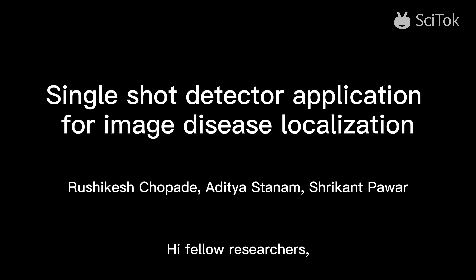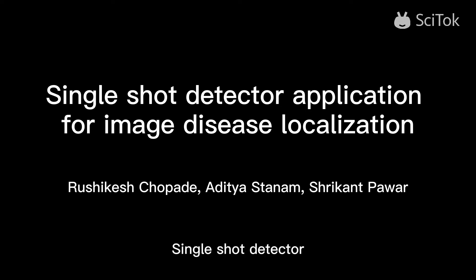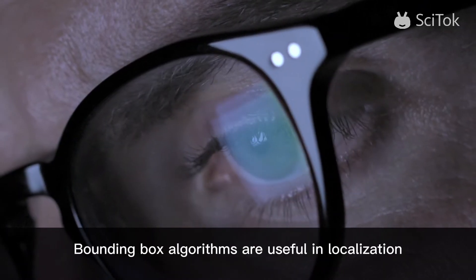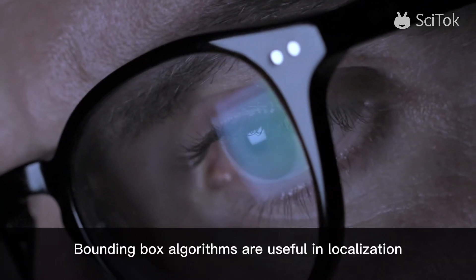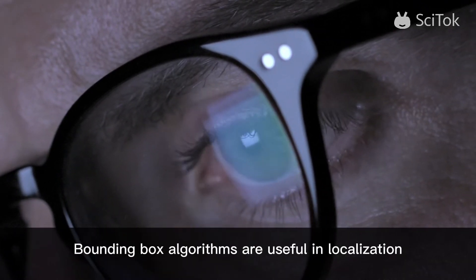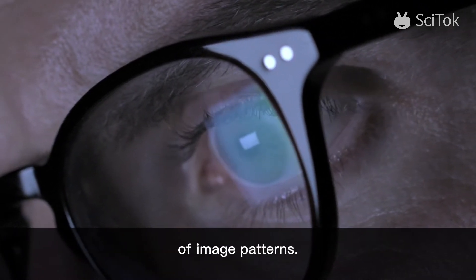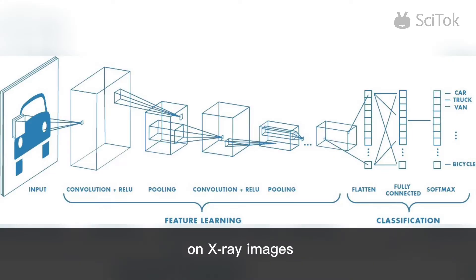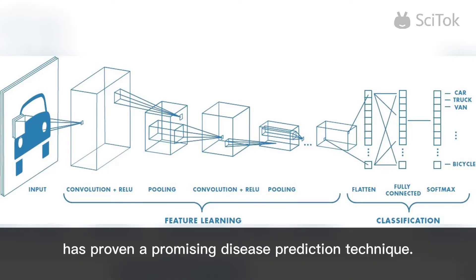Hi fellow researchers, today we will talk about single-shot detector application for image disease localization. Bounding box algorithms are useful in localization of image patterns. Recently, utilization of convolutional neural networks on x-ray images has proven to be a promising disease prediction technique.